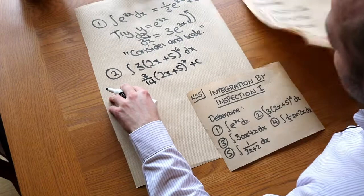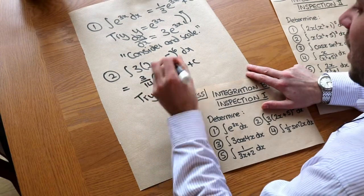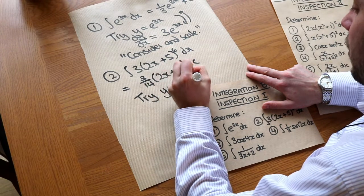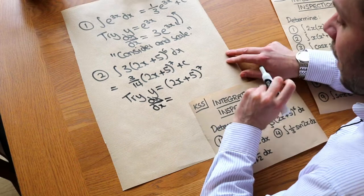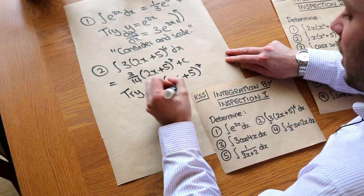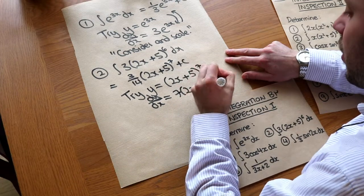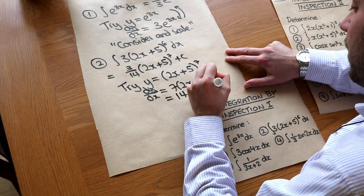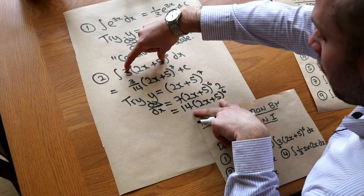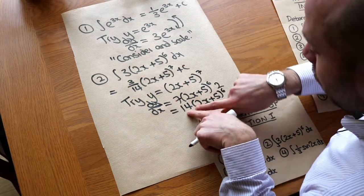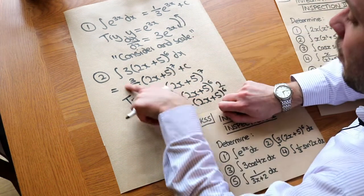Doing it the long-winded way — which helps with harder examples — let's try something that might differentiate to this expression. It's sensible to try this with one power higher, so (2x + 5) to the 7. Differentiating using the chain rule: blah to the 7 differentiates to 7 blah to the 6, then times by the inner function differentiated, which is 2. That gives 14(2x + 5) to the power of 6. So to get from 14 down to 3 on the front, we divide by 14 and times by 3 — giving 3/14 of it.